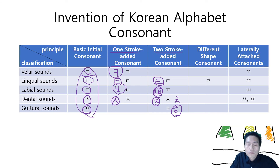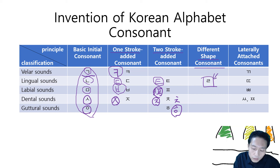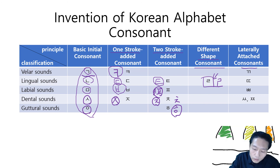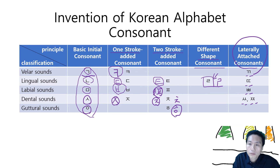Apart from these, you can see a different shape of consonant — 리을. 리을 is a lingual sound, but it's not derived from 니은; it's its own lingual sound, called 리을. And there are also laterally attached consonants — you just place the same consonant next to itself. These are called laterally attached consonants.